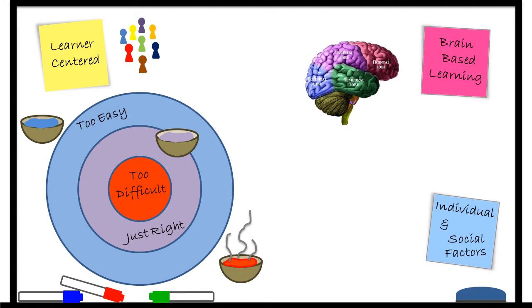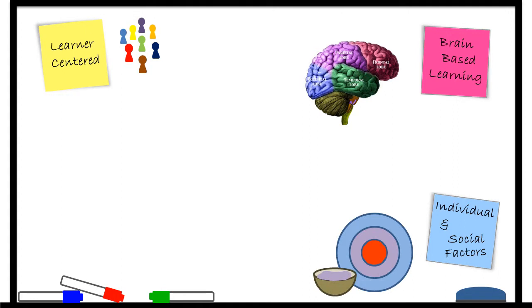I like to think of this learning theory as the Goldilocks theory: not too hot, not too cold, but just right. Another aspect of social development theory is social interaction. Emotion has a strong influence on learning.